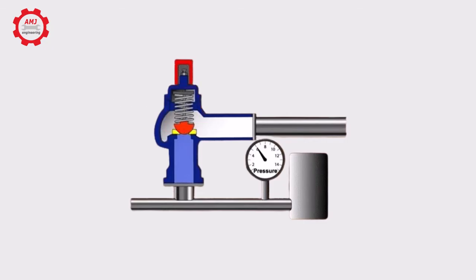This preset force is commonly achieved with an adjusting screw acting on the spring. By turning the screw in or out, the operator compresses or decompresses the spring respectively. The valve can be set to open at any pressure within a desired range.